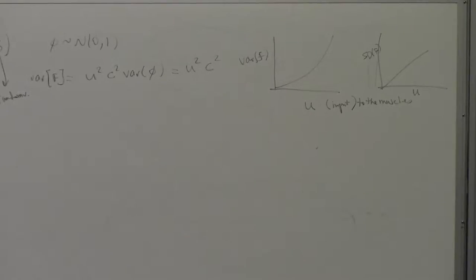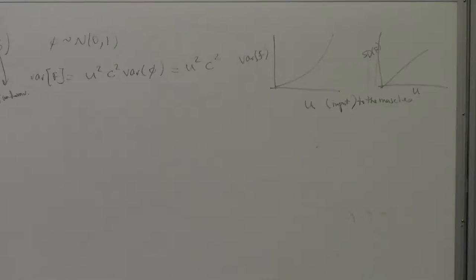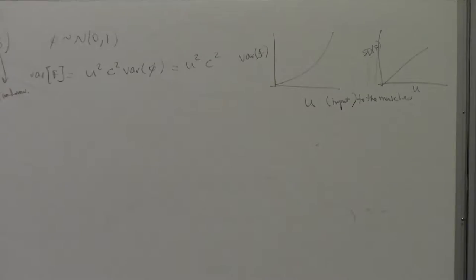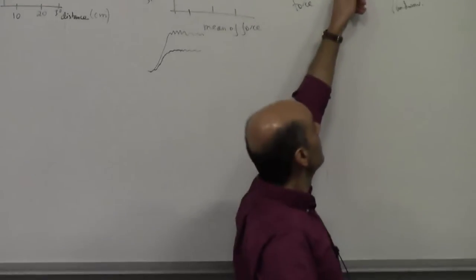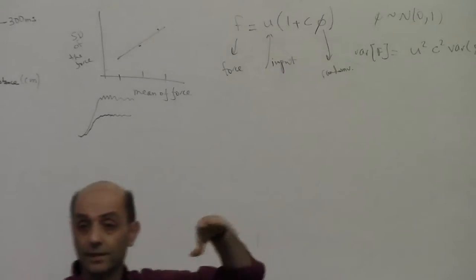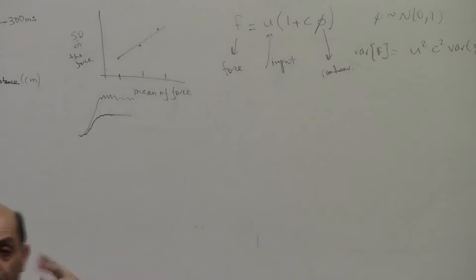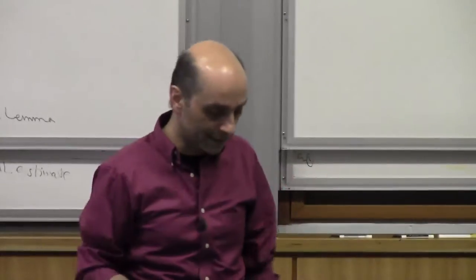Signal-dependent noise is basically a noise structure where you're getting multiplication of an input by the random variable, not just summation. Up in the Gaussian model, you just have additive noise. Now I have noise that multiplies the signal. So its variance depends on the variance of the random variable, and C gives you the slope of standard deviation versus mean input.